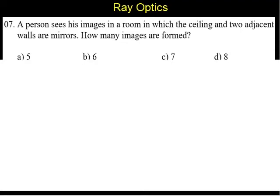Question number 7. A person sees images in a room in which the ceiling and two adjacent walls are mirrors. How many images are formed?